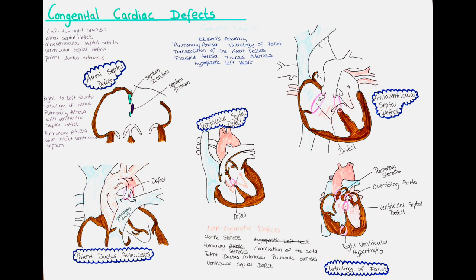Now we will talk about ostium secundum and ostium primum atrial septal defects — essentially holes in the wall between the atria that should close after birth. The ostium secundum atrial septal defect is located at the edge of the fossa ovalis. The hole can be round, oval, or sometimes fenestrated, meaning there are tissue strands across the opening but it is not completely closed. This defect makes up around 7% of congenital heart defects and rarely causes heart failure or failure to thrive on its own.